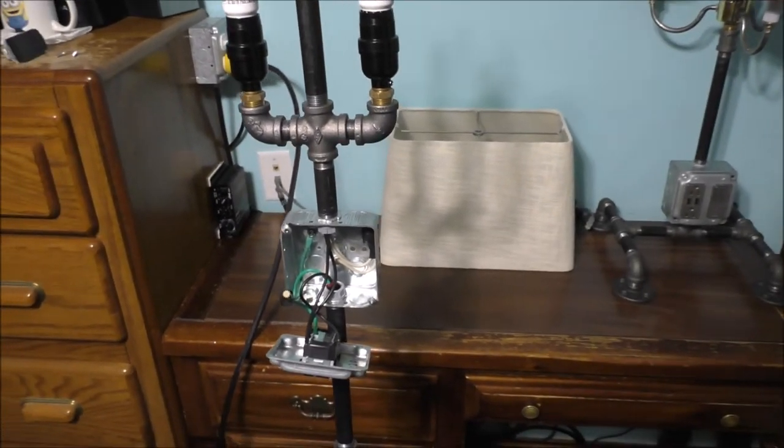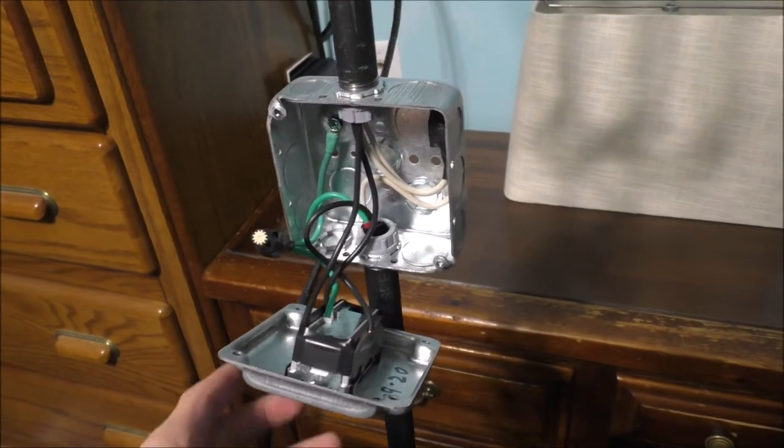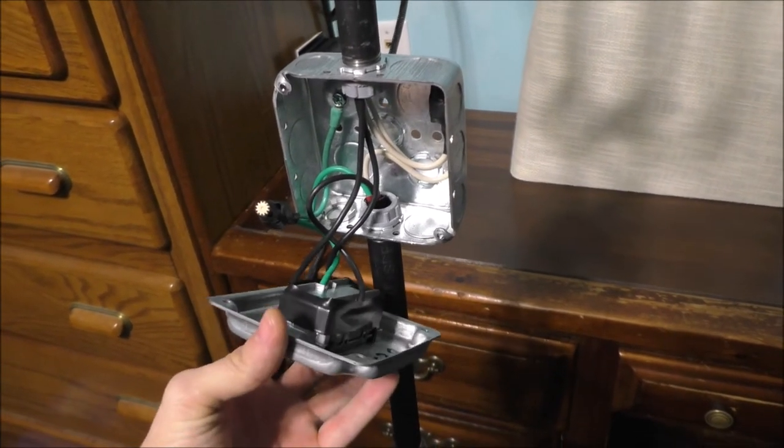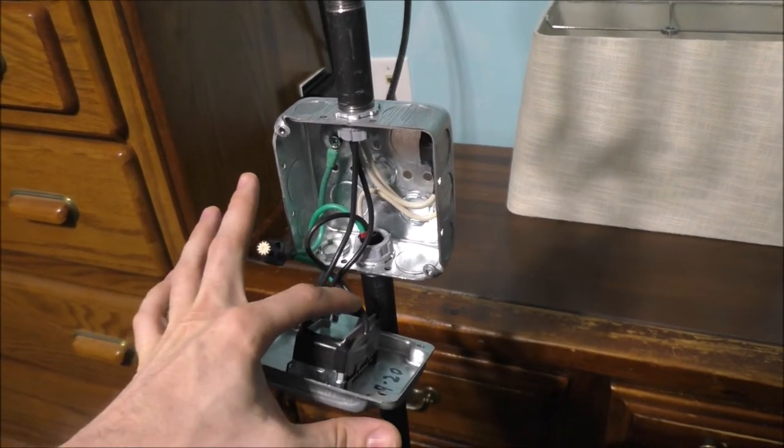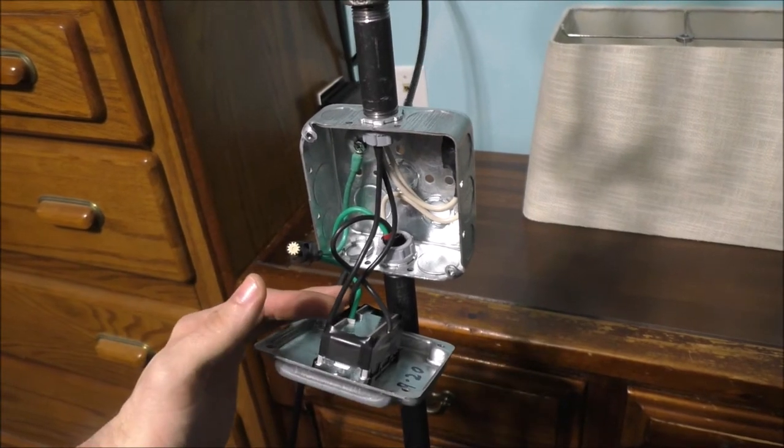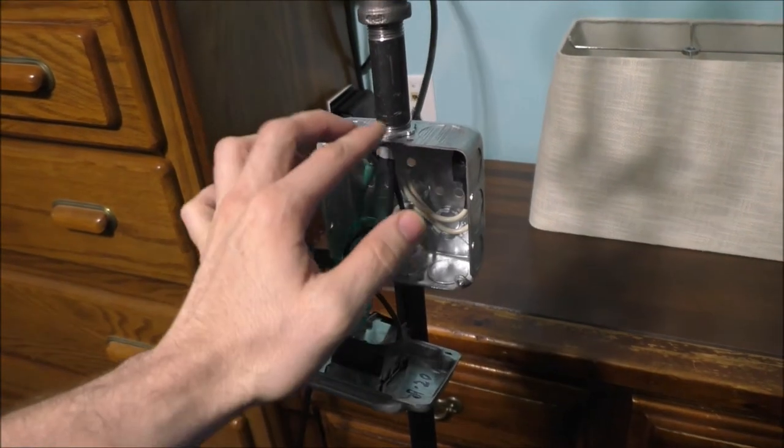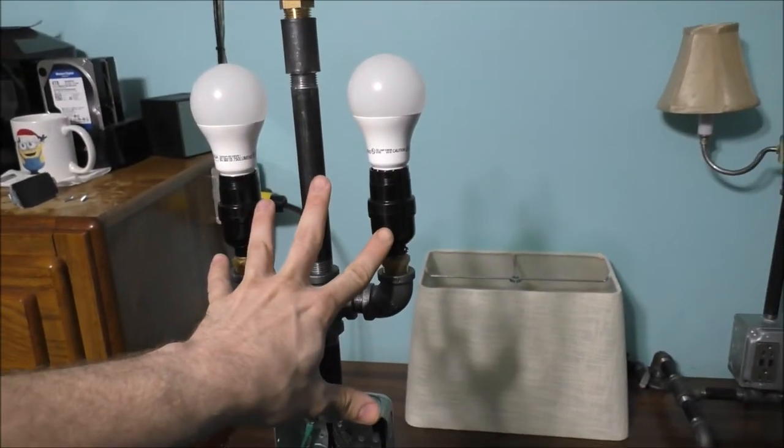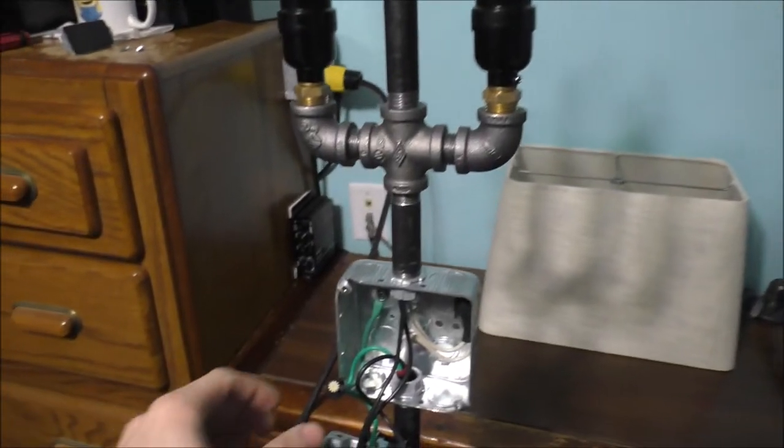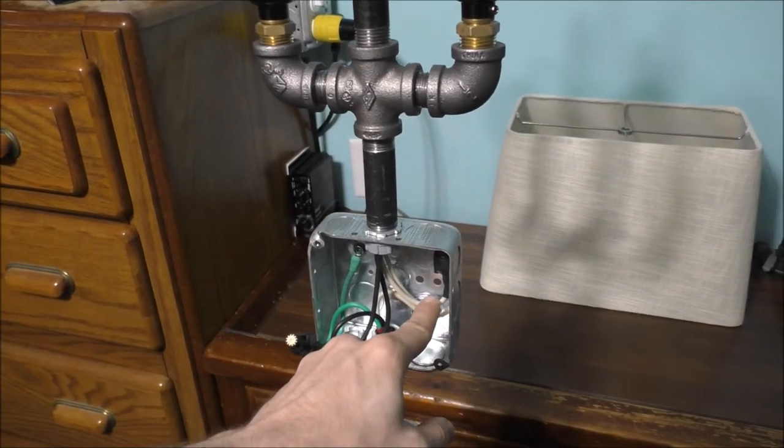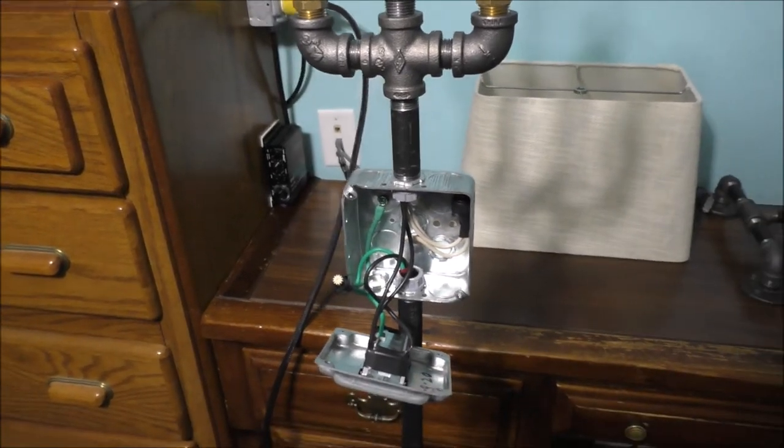But before we talk about the switch, let's talk about the wire diagram. I got my power going into the switch, and the power going out of my switch to the two sockets on the actual lamp itself. I got my ground, and I also got the neutral itself.